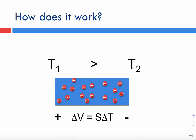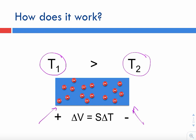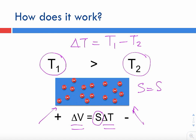This results in a temperature differential. On the left I have a higher temperature T1, and on the right I have a lower temperature T2. Any semiconductor will do this: when you have a temperature imbalance like this, a voltage can be measured between the two ends of the semiconductor. That voltage is delta V, and it is directly proportional to the temperature differential T1 minus T2. The proportionality constant is S, and it's called the Seebeck coefficient.